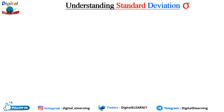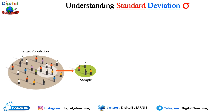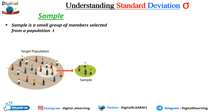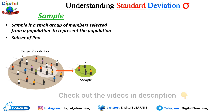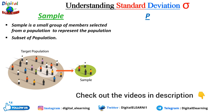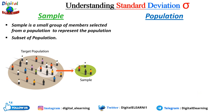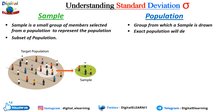Before we move ahead, let us first understand these two terms: population and sample. A sample is a small set of members selected from a population to represent it — it is basically a subset of a population. A population, on the other hand, is the group from which the sample is drawn. Exact population parameters will depend upon the scope of the study.